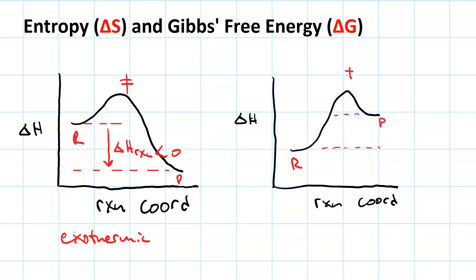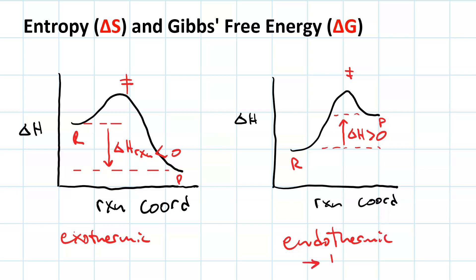What about this situation, where the products are higher in energy than the reactants? In this case, we've got a delta H that is positive. This is endothermic, and this is disfavored by enthalpy.